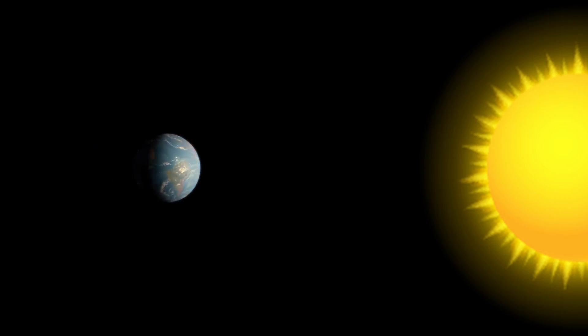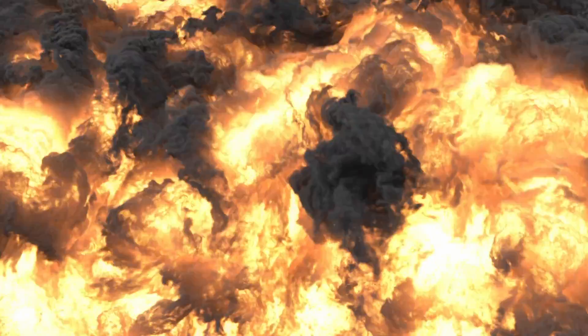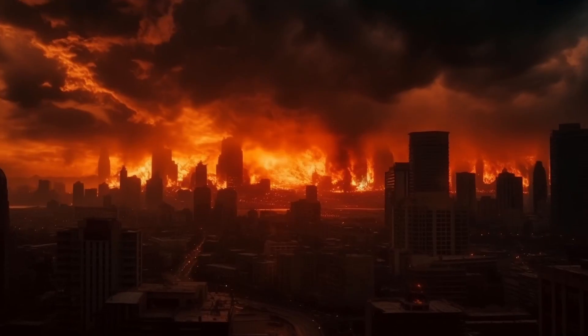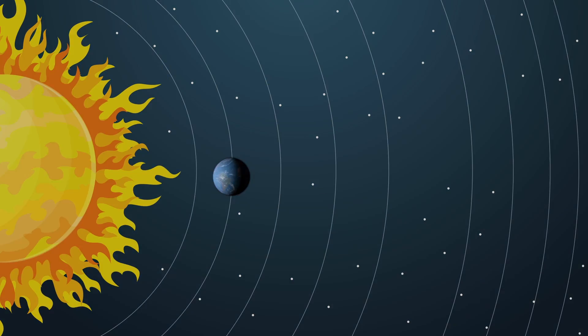As we drew closer to the Sun, the heat would intensify, triggering widespread wildfires, boiling oceans, and destroying most life on Earth, even before our trajectory crosses into Mercury's orbit.